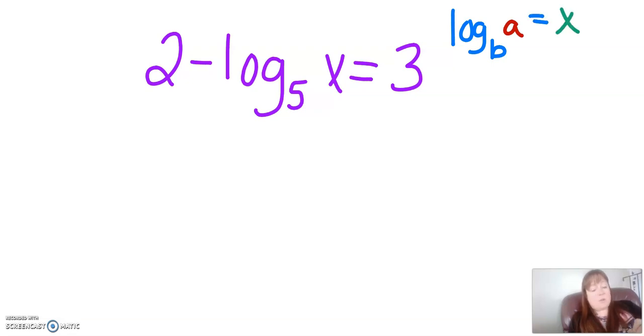We're trying to get it into that form because once we get it into this form, then we can switch it around so we have the base to the exponent equals the argument, and then we can probably solve. What are we trying to solve for here? We're trying to solve for the argument, right? x is the argument, and so if I can put it in this form right here, then I'm going to be able to have my argument by itself, and then it'll be obvious.